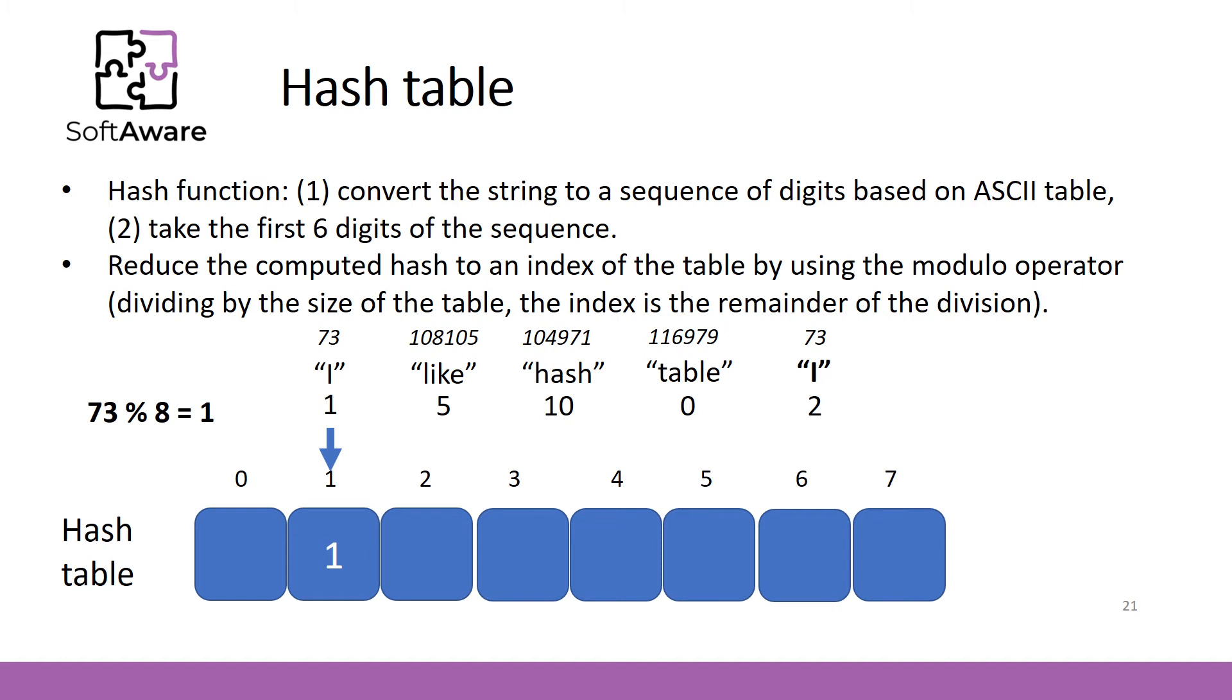73 divided by 8, reminder is 1. We can add the associated value at the position 1. 108105 divided by 8, reminder is also 1. This is a problem. We are going to talk about it in a minute. For now, let's just finish the mapping.